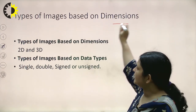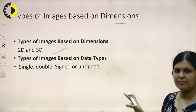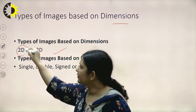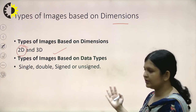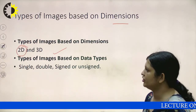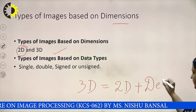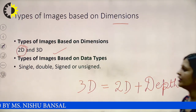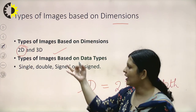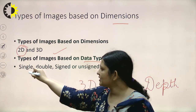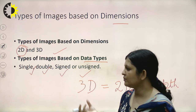Types of images based on dimension: 2D images represent content on a plane. 3D images add depth — so 3D is 2D plus depth. Nowadays, 3D imaging is popular to make processing more realistic. Based on data type, images can be single, double, signed, or unsigned — referring to how much data is stored per pixel.